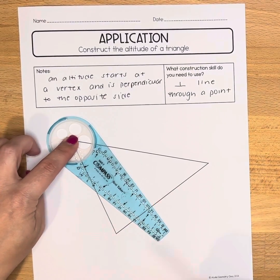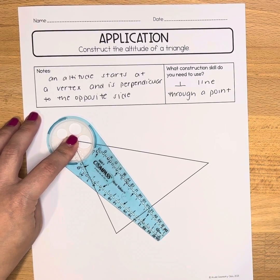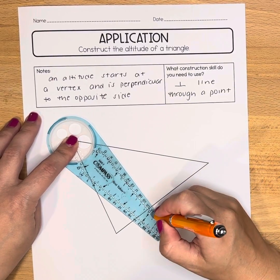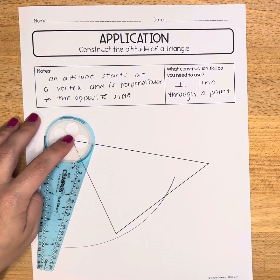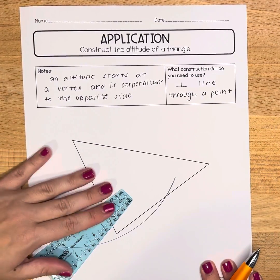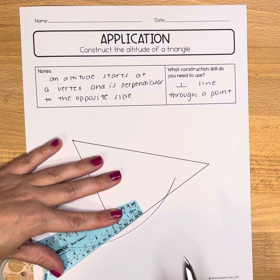I'm going to put the starting point of my compass there and I'm going to create an arc that intersects this side twice. If yours is too short like mine is here, you can simply just use a straight edge to extend that side so that you have your second intersection.